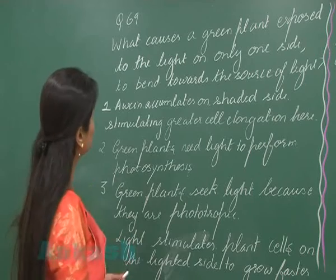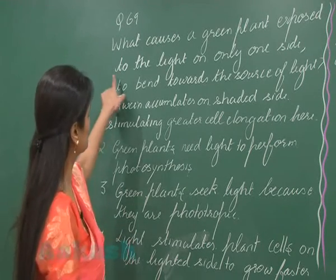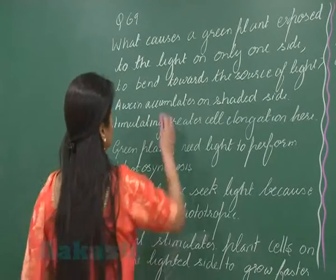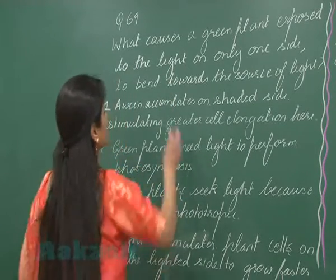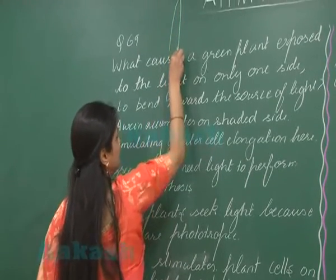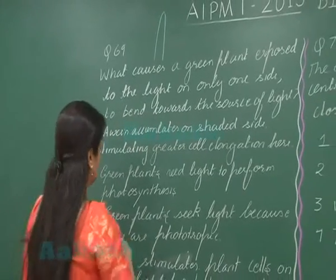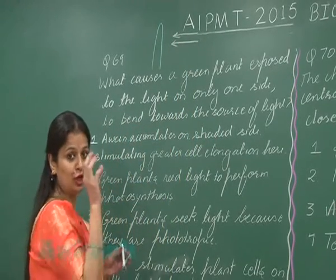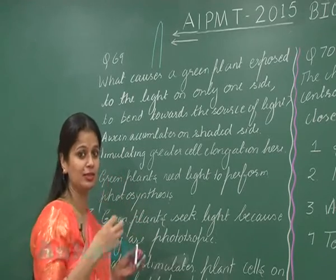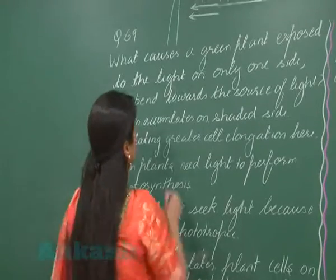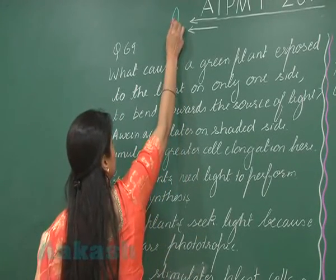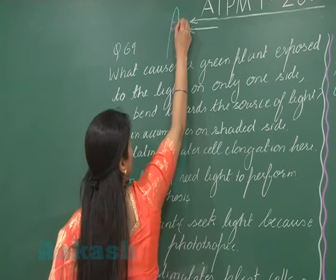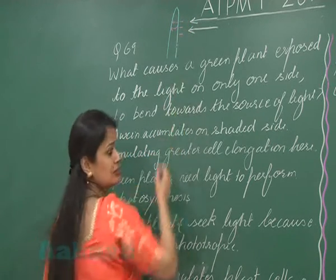Question number 69: what causes a green plant exposed to light on only one side to bend towards the source of light? If this is the shoot of the green plant, it is illuminated by light from only one side. Due to the stimulus of light, auxin — a growth hormone — will show movement from the light side towards the dark side, so the concentration of the hormone on the light side will decrease.